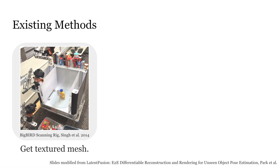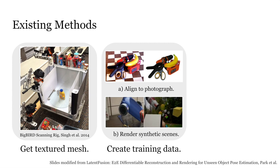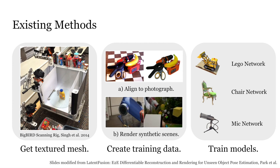First, we use specialized equipment to capture the object's textured mesh. Then, training data is generated by aligning the texture mesh to real photos or by rendering the mesh using computer graphics. Finally, we train a neural network to estimate the pose for each object.